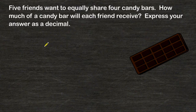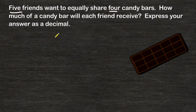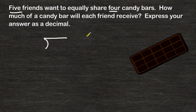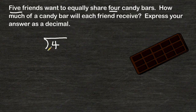So in the problem, we have five friends that are going to share four candy bars. What we have to do is figure out which of the two numbers goes on the inside of our division symbol, and which number goes on the outside. One thing you can look for is which of the two numbers represents the object that is going to be cut up or divided up. In this case we are going to divide up the candy bars, so the four is what we write on the inside, and what we are going to divide by are the five friends.